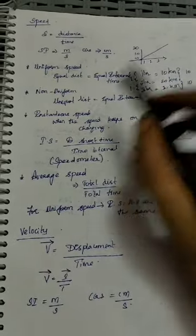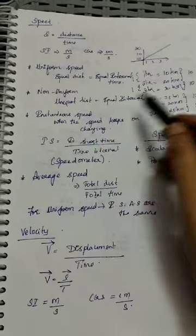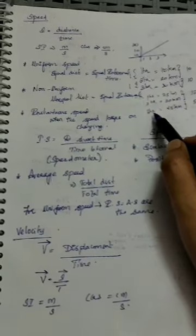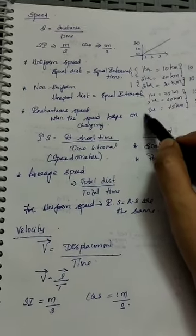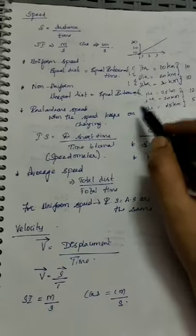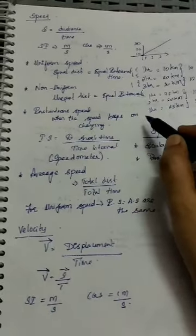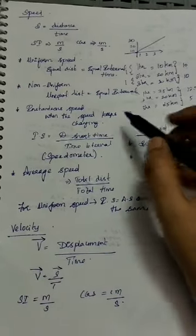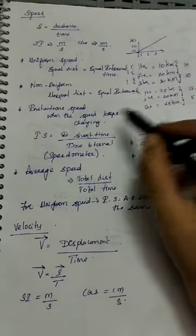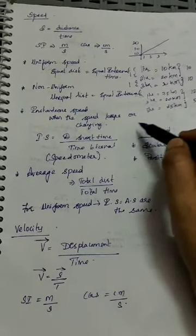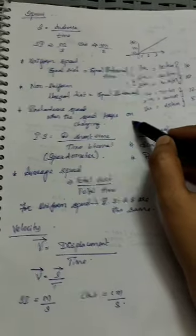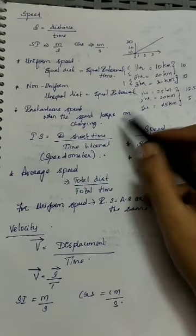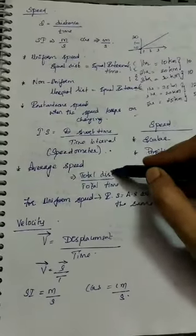Instantaneous speed is the speed calculated over a very short interval of time — for example, between 2.5 minutes — measuring how much distance is covered in that very short time period. Instantaneous means it is for only a short time, within a few seconds or minutes. Your speedometer shows your instantaneous speed.